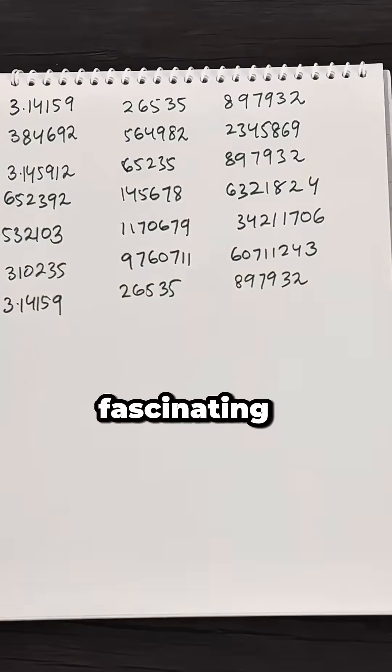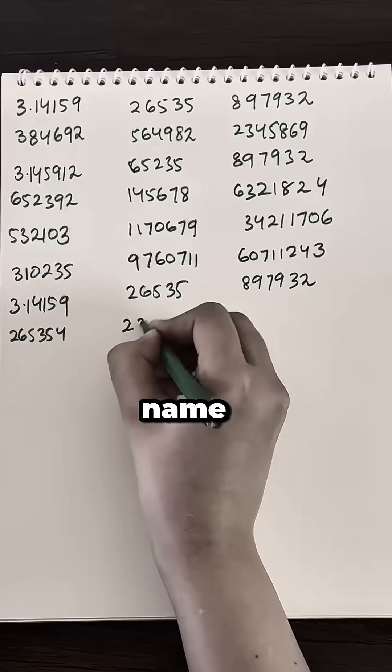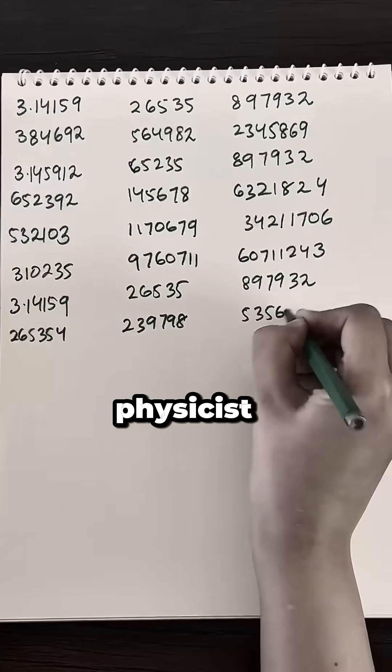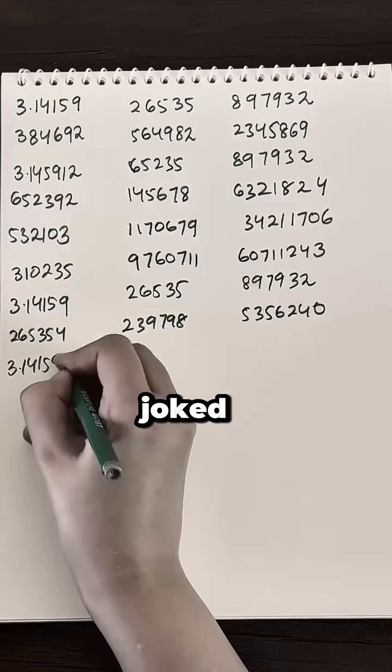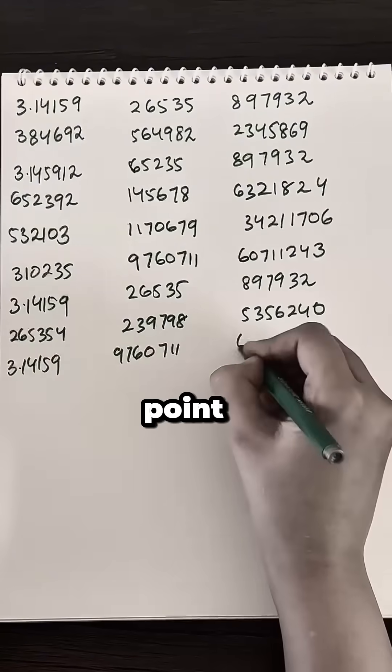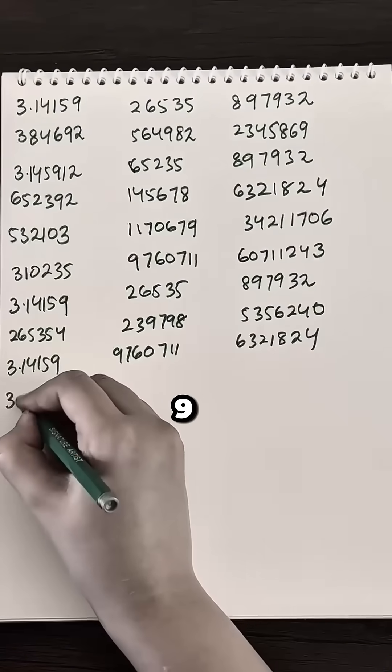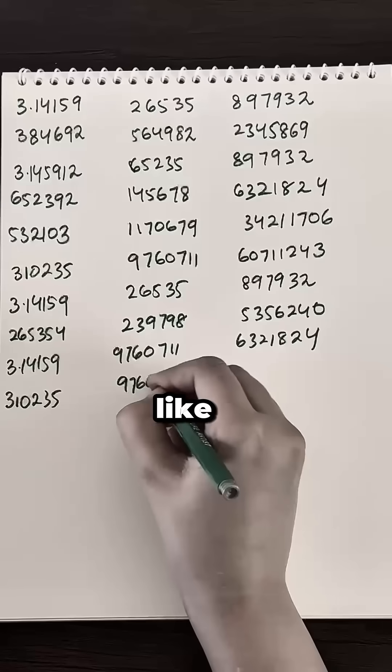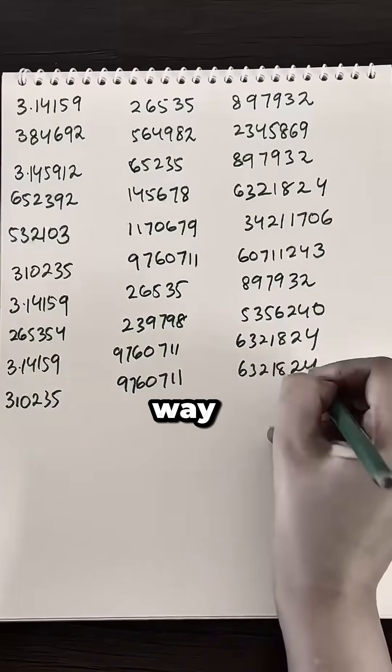This rare pattern is so fascinating it got its own name, the Feynman Point, after the legendary physicist Richard Feynman, who once joked that if you memorize Pi up to that point, you could just start saying nine, nine, nine and pretend like you knew the whole thing. It's a funny way to cheat.